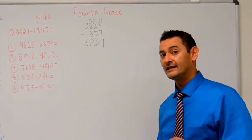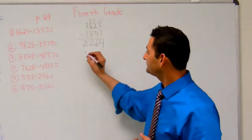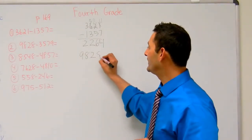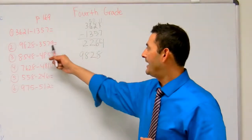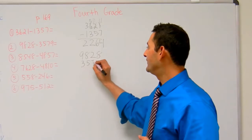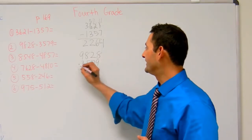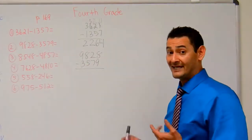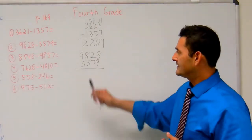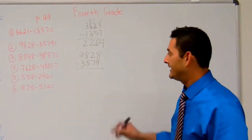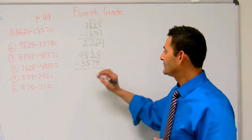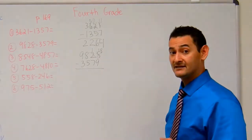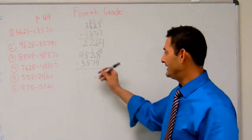Now let's take a look at number 2. There I've got 9,828 minus 3,579. 8 minus 9 — well, I can't do that. Let's go to the 10's place and borrow a 10. That becomes a 1, that becomes 18. 18 minus 9 — that's going to be 9.